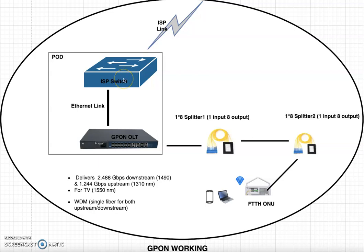The ISP switch can be from any vendor as per your requirement. The link from the ISP switch is now connected to the GPON OLT. Here we have used an Ethernet link to maintain the connection between the ISP switch and the GPON OLT. The GPON OLT consists of multiple active and passive ports.